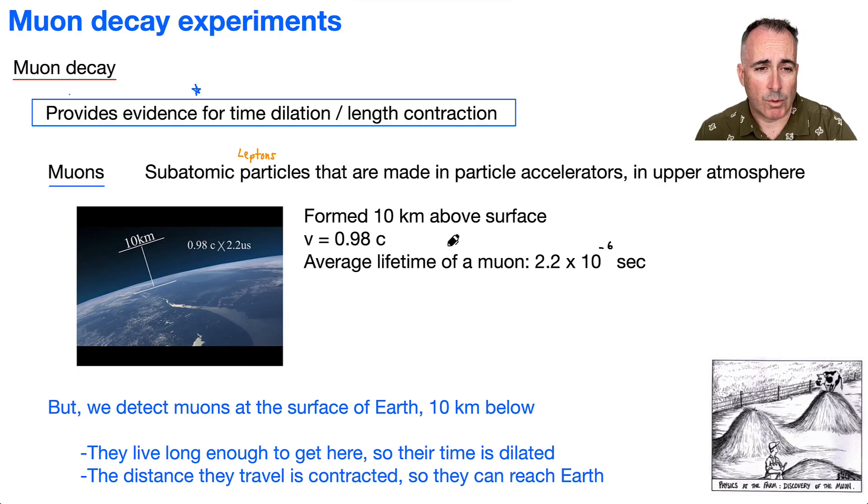So what can we do with this? We can figure out how far will they go in their lifetime. How far will they actually travel? So let's use this equation where speed is equal to distance divided by time. Let's get distance by itself. So D equals V times T, the speed times the time.